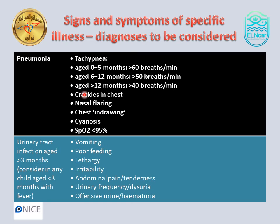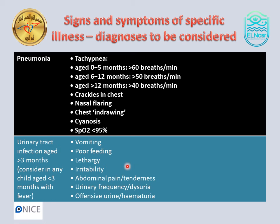For pneumonia: tachypnea, crackles in the chest, chest recession, and nasal flaring. Urine analysis should be considered for suspected UTI. In a child less than 3 months with fever, consider UTI. Symptoms include vomiting, irritability, poor feeding, and urinary frequency.